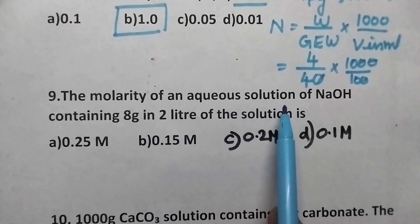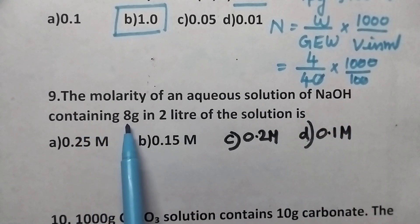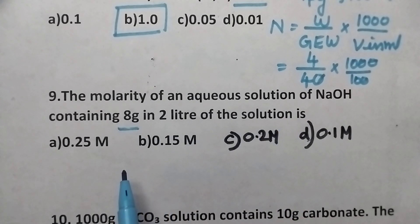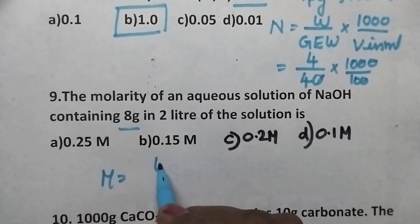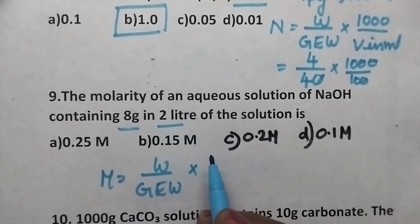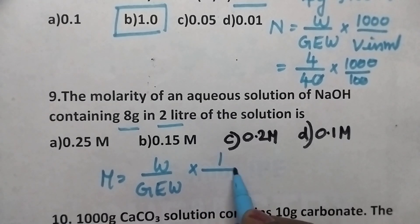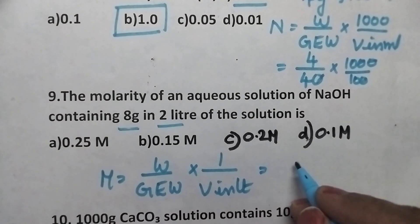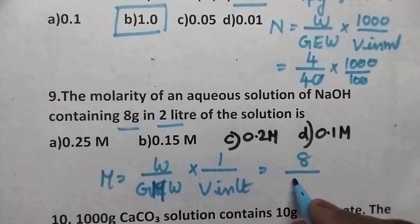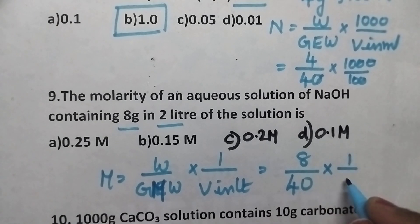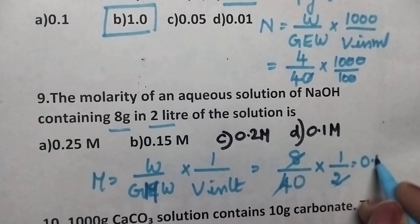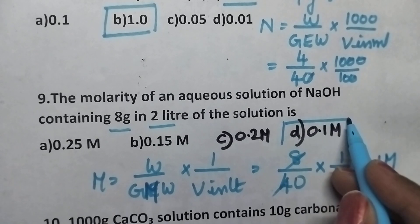The normality of an aqueous solution of NaOH containing 8 grams in 2 liters of the solution is? Here we have to calculate the normality. The formula is: normality equals weight divided by gram equivalent weight, into 1 divided by volume in liters. The weight of NaOH is 8 grams, gram equivalent weight is 40, into 1 by 2. That is equal to 0.1 normal. So option D is the right answer.